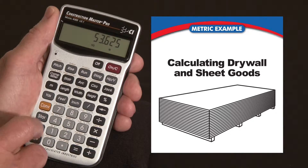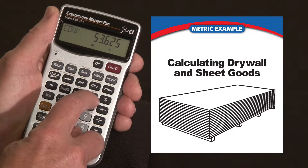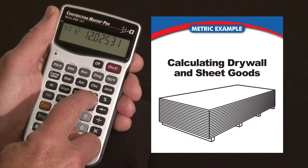Now we're going to convert that to number of sheets. We hit Convert, and over the height key it says Drywall. For 4x12 sheets, we're going to need just over 12 of them, so call it 13.